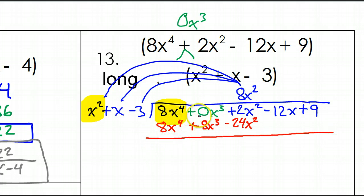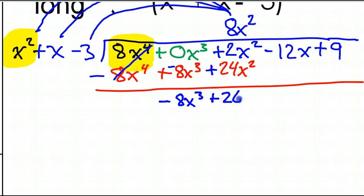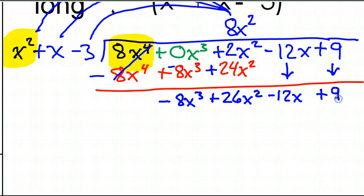At this point we need to subtract. We subtract by changing the signs — make this negative, this negative, and this positive. These terms cancel out. Now I've got 0x to the third power and negative 8x to the third power, which gives negative 8x to the third power. 2x squared and 24x squared make 26x squared. Then I bring down the other terms: negative 12x and plus 9.